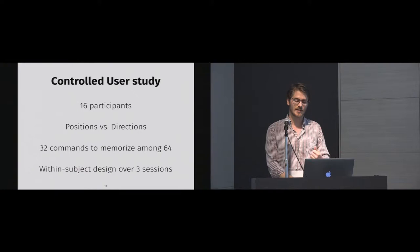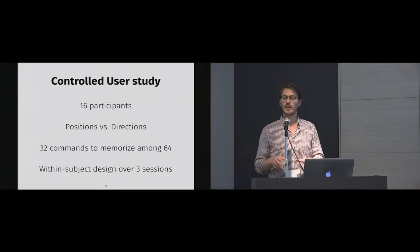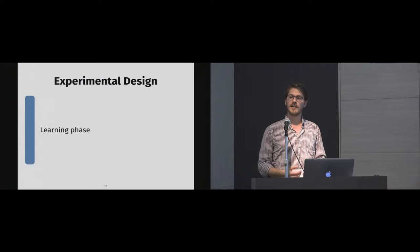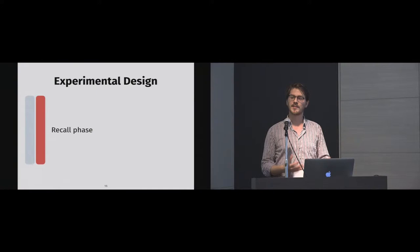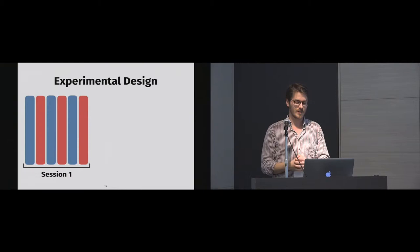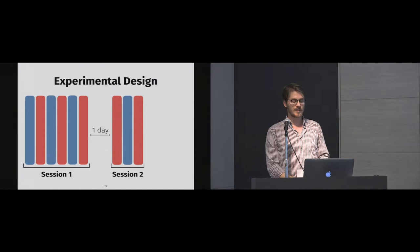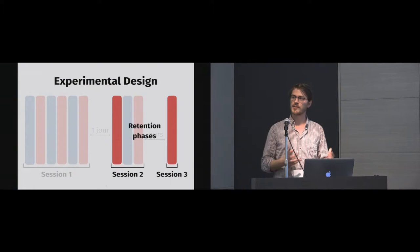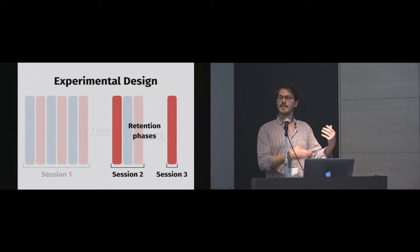The task was that we showed a command to select, and the participant had to select the right one. We used two types of phases: learning phases, where participants could see the commands and had to select and memorize them; and recall phases, where participants no longer saw the commands and had to recall what they had learned. Session 1 had several learning and recall phases. Session 2 was one day later with fewer phases. Session 3 was approximately two weeks later to assess retention — how well users retained information after periods of inactivity.